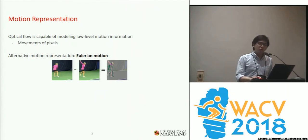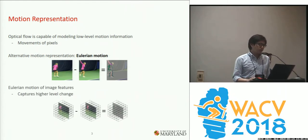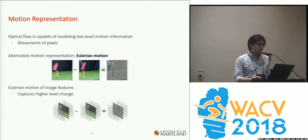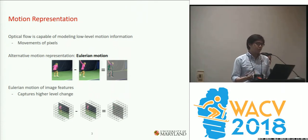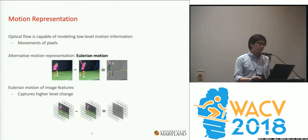By using this very simple motion representation, we can look into the Eulerian motion of the image features, which is the difference of the higher-level features in the CNNs. This kind of Eulerian motion of image features — the feature difference — captures higher-level change in the videos, like pose or objects.